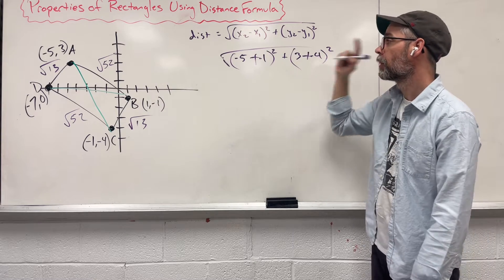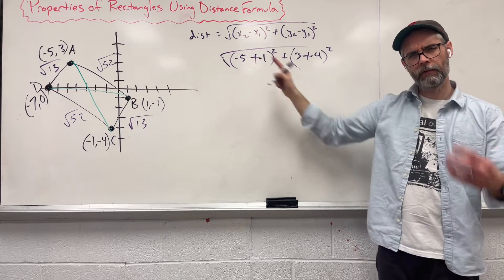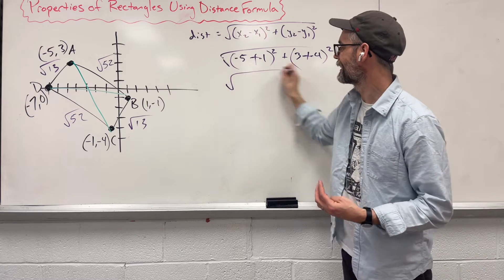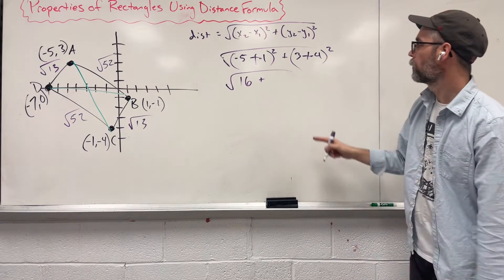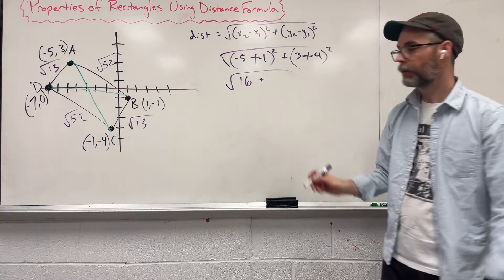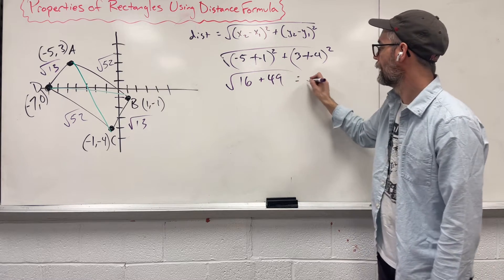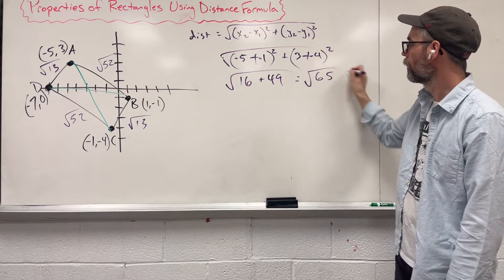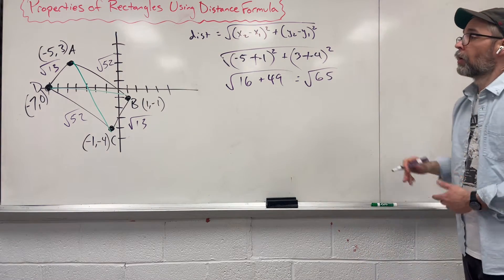1 minus 5 is negative 4, square it, and you get 16. Plus, 3 plus 4 is 7, 7 squared is 49. Leaving us with square root of 65.